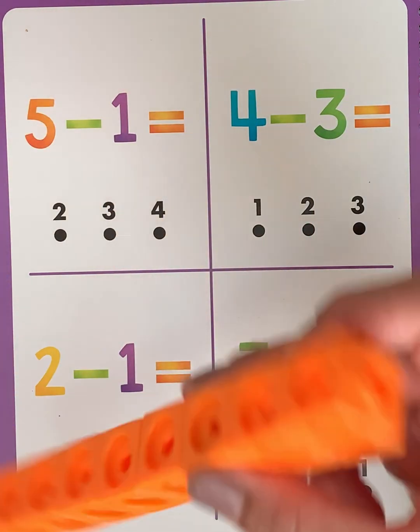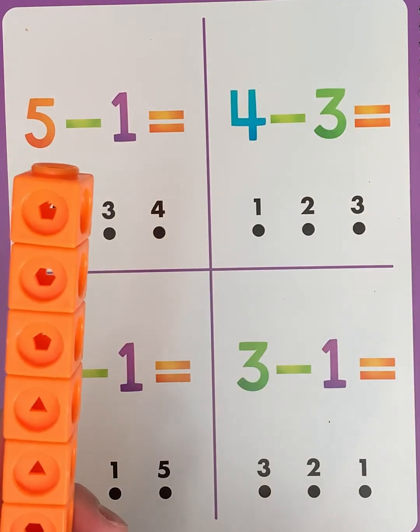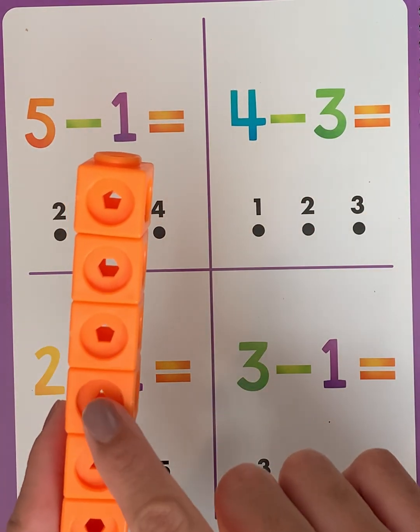We'll use our orange cubes. Our first number is 4, so we want to start off with 4 cubes: 1, 2, 3, 4.